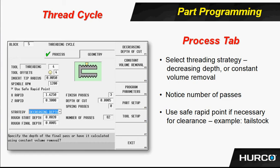The next field is called 'strategy.' You can see it is highlighted, showing 'decreasing depth' in the field. The F2 soft key on the right side of the screen is 'constant volume removal.' Those are your two options: decreasing depth and constant volume removal. Decreasing depth is probably the more common — it's what we want to use the most. That gives you the ability to describe or determine a rough start depth, which is going to be the first cut maximum depth.